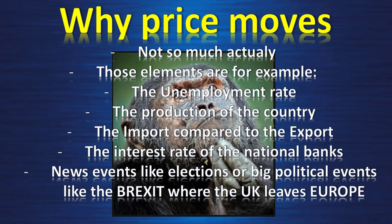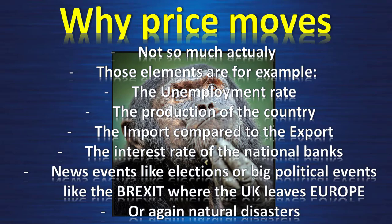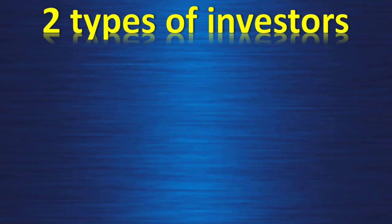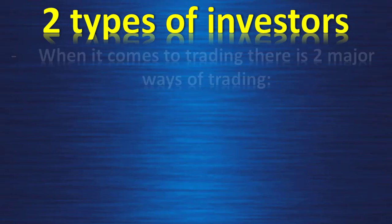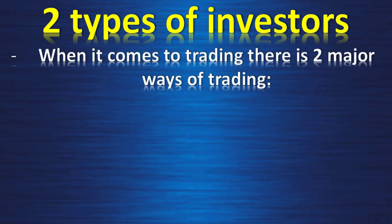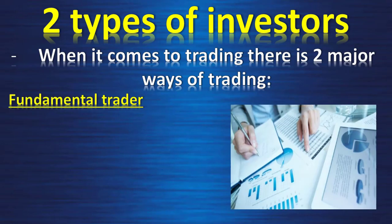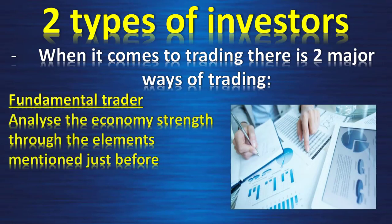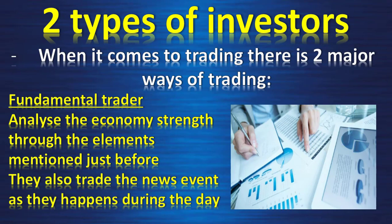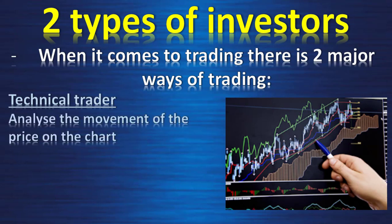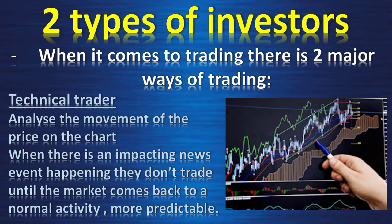There are two major types of investors when it comes to trading. The first is the fundamental trader, who analyzes economy strength through the elements mentioned and also trades news events as they happen during the day. On the other hand, the technical trader analyzes the movement of price on the chart, and when an impacting news event happens they don't trade until the market comes back to normal, more predictable activity.